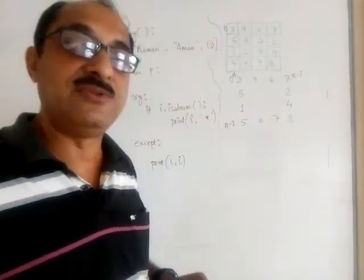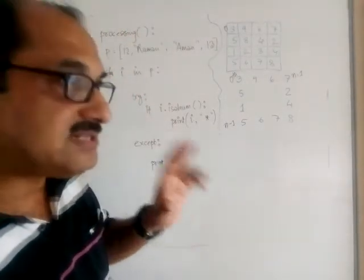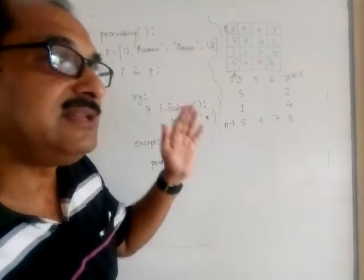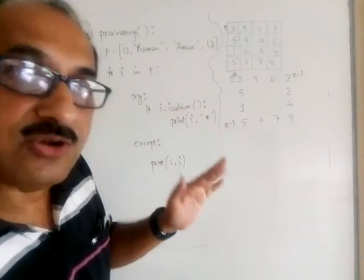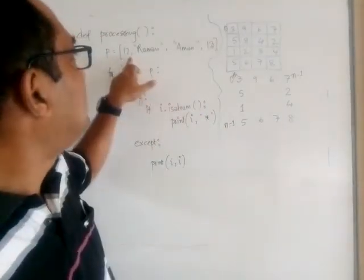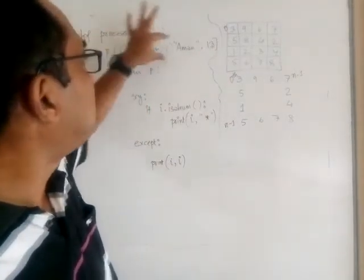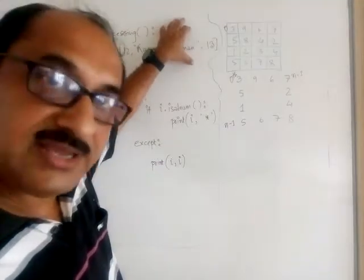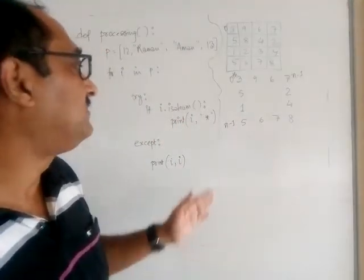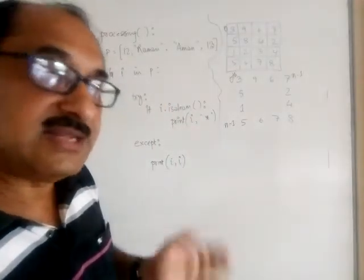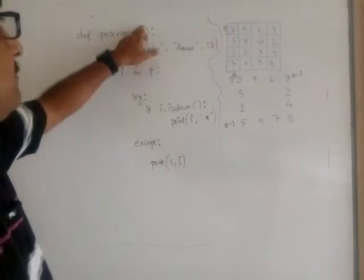There is a question given here — a slightly unusual question, which I solved in a slightly different way. You have to write a function where a list is given, and if you find list elements are numeric in nature, they should be printed twice. In the same list another element can be non-numeric, that is alphanumeric. For example, a list like: 12, Raman, Aman, 13. If a numeric element is found, print it twice. If it is an alphanumeric element, that element should be followed by a star.